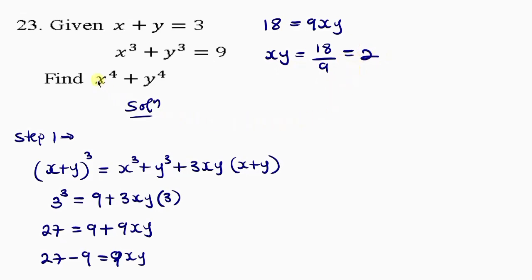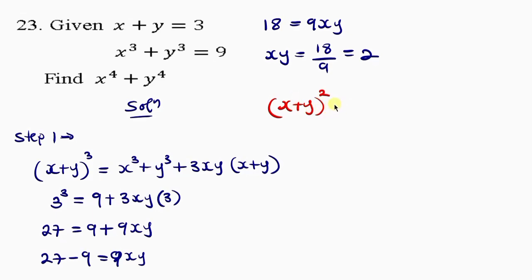In order to get x to the power of 4 plus y to the power of 4, I will first need to find x plus y to the power of 2. Let's expand this using binomial expansion, which gives us x squared plus y squared plus 2xy.